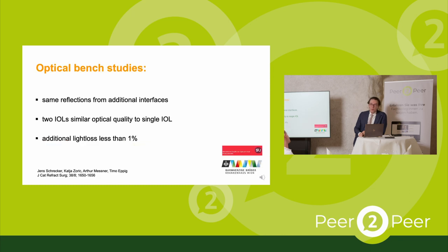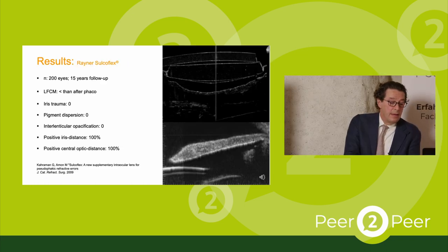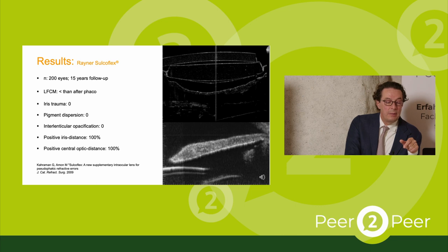Another question was whether the optical performance of two lenses in the eye — four surfaces — has the same quality as a single lens with two surfaces. Schrecker was the first to publish that the additional light loss of a second lens is less than one percent, very similar to a single lens in the capsular bag. The optical performance is the same. These are results of 15 years follow-up of 200 lenses.